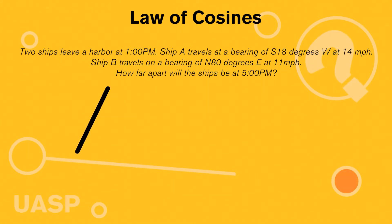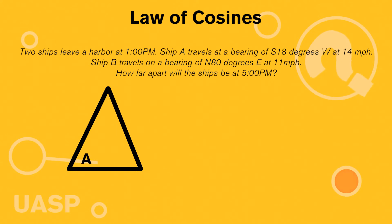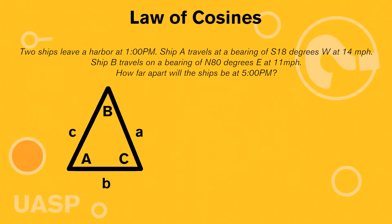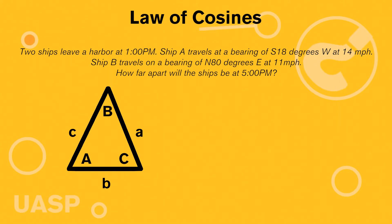Given a triangle with angles capital A, capital B, and capital C, and corresponding sides lowercase a, lowercase c, and lowercase b — note the lowercase sides have to be opposite of the capital letter angle. So lowercase a has to be the opposite side of capital A, lowercase b has to be the opposite side of angle capital B, and so on with C.